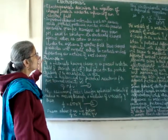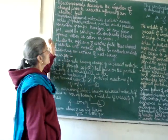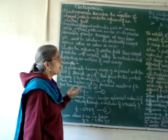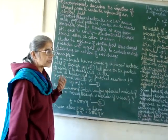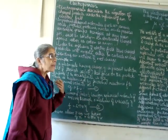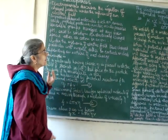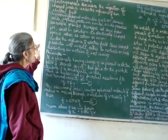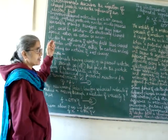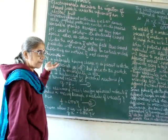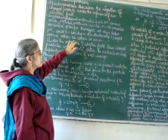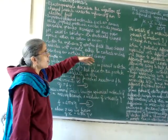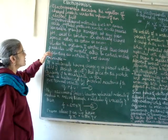Many biomolecules such as amino acids, peptides, proteins, and nucleic acids possess ionizable groups. Therefore, at any given pH, depending on the pH of the medium, they can exist as electrically charged ions. Proteins and amino acids can exist as cations or anions depending on that charge.